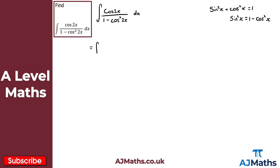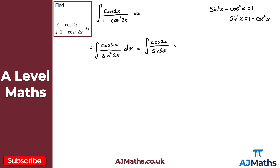So we rewrite the integral: the numerator stays as cos 2x, and the denominator 1 minus cos squared 2x becomes sin squared 2x. We can then write this as a product: cos 2x over sin 2x times 1 over sin 2x, with respect to x.